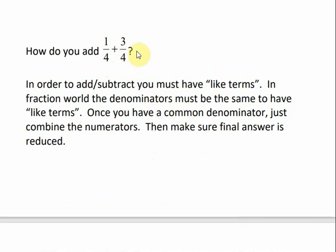Once we have a common denominator, that's going to be the denominator of our answer. That doesn't change. We just add the numerators. So, 1 plus 3 would be 4, and then we always reduce our fractions, and this would become 1.